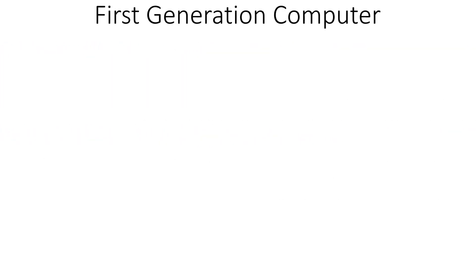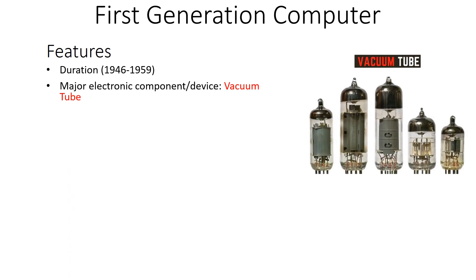The duration of the first generation is 1946 to 1959, so computers developed between 1946 to 1959 are called first generation computers. The first generation computers use vacuum tubes as their major electronic component — that was the main electronic device at that time.